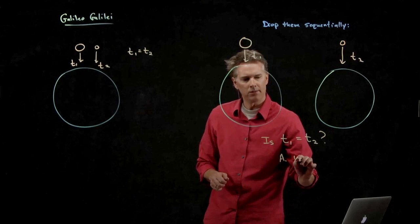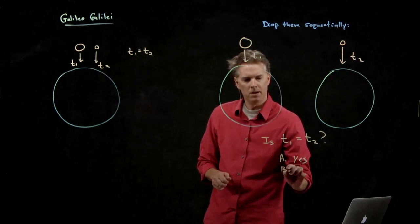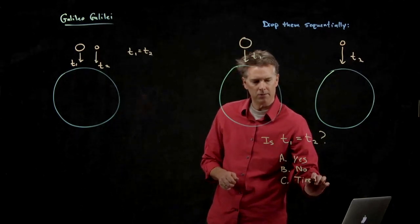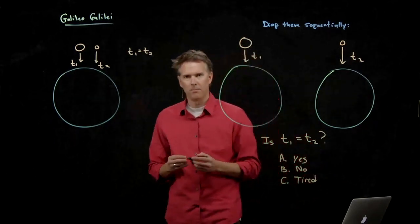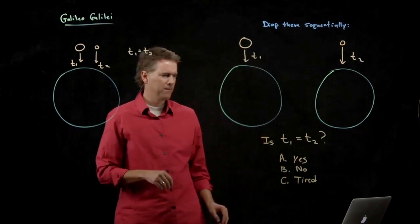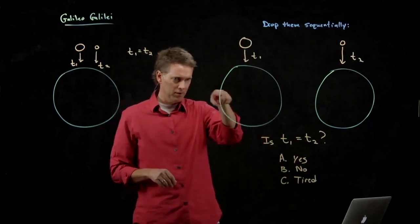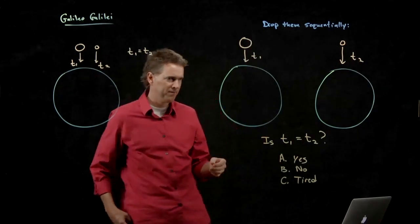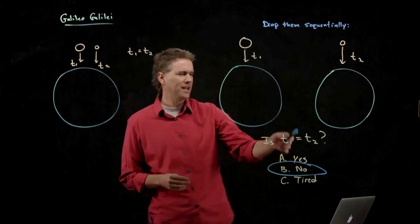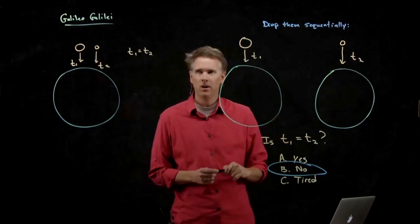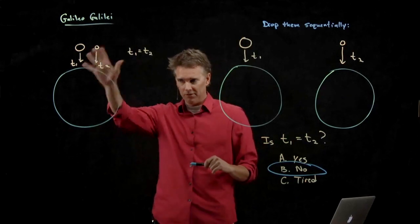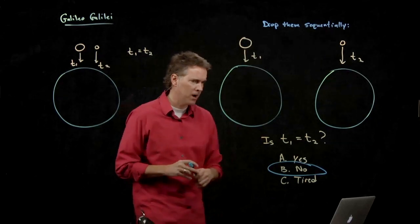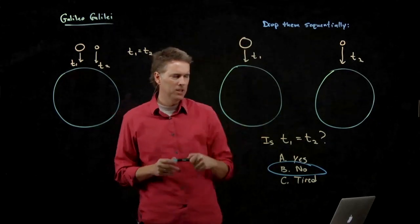Is T1 equal to T2? A is yes, B is no, C is I'm too tired to answer, I'm still in my pajamas at home, okay? Why don't you guys discuss it for a few seconds with your table and let's come up with an answer. Okay, so no is the right answer. T1 is not equal to T2, even though it was in this case, this is still true. Nothing wrong with that. So what is going on here? How is it possible that T1 could not be equal to T2 here? Any thoughts?